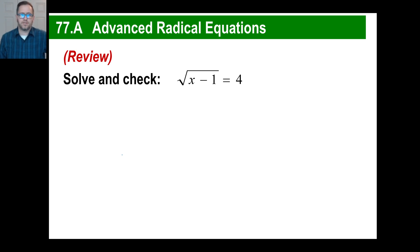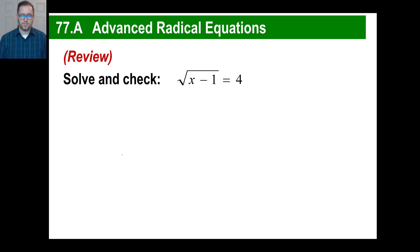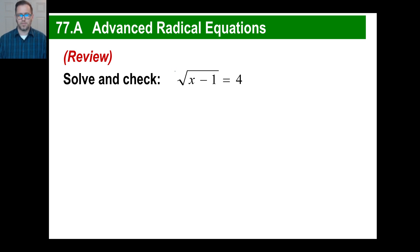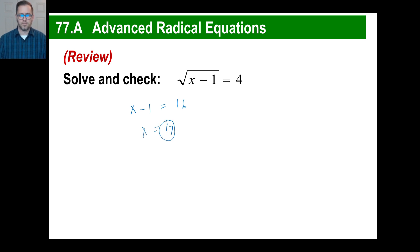Let's take a look at some advanced radical equations. We've done these before, so let's review our method. You just square both sides, right? On the left we have x minus 1, on the right we have 16, and then x becomes 17.